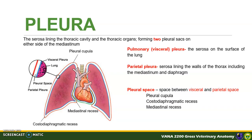The serosal lining of the thoracic cavity and the thoracic organs forms the pleura. The pulmonary or visceral pleura is the serosal lining on the surface of the lungs, while the parietal pleura is the serosal lining at the walls of the thorax, including the mediastinum and the diaphragm. The space between the visceral and the parietal pleura is called the pleural space. The pleural cupula is the cranial extent of the pleural cavity extending through the thoracic inlet, while the costodiaphragmatic recess is the potential space between the costal wall and the dome-shaped diaphragm. The mediastinal recess is the space filled by the accessory lobe of the right lung between the mediastinum and the plica vena cava.